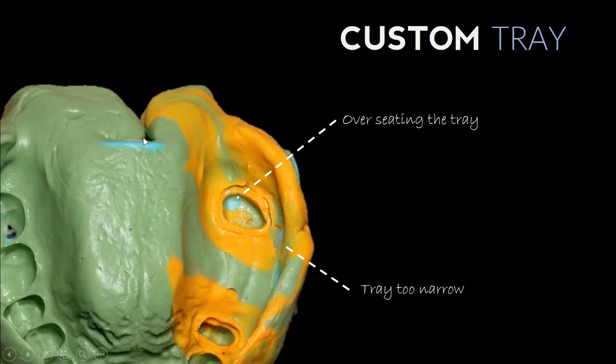This helps in reducing the total amount of impression material. This polyvinyl siloxane material is actually quite expensive, so if you can minimize the amount of material, we'll save on some costs.